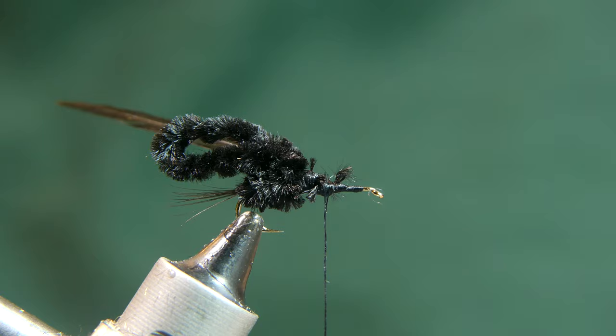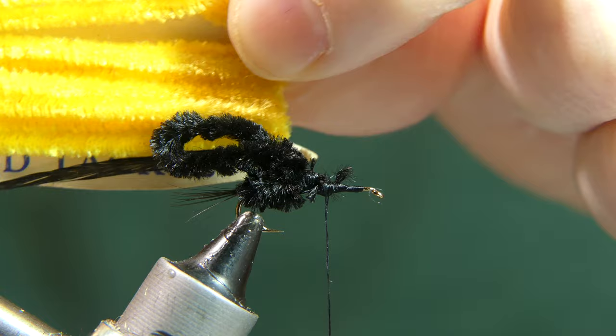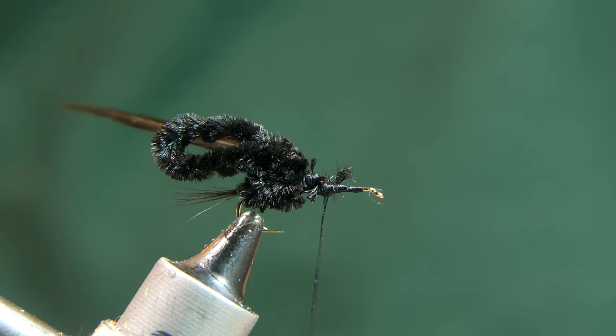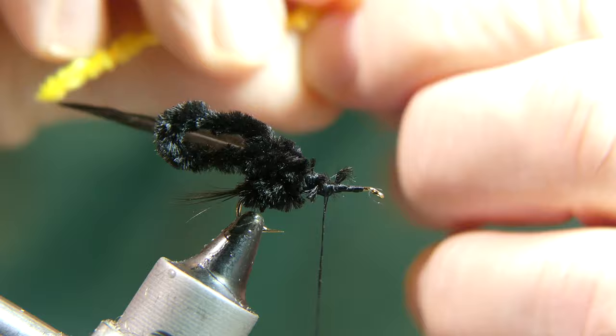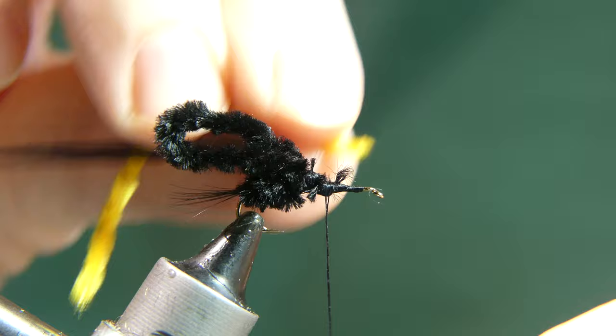Next we're going to tie in some of this old gold chenille. This chenille is several decades old. Still works well. It's held up very nicely over the years. Cut away a small piece and go ahead and tie it in right behind where you left the black chenille.